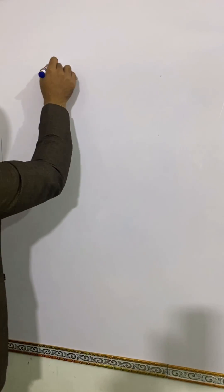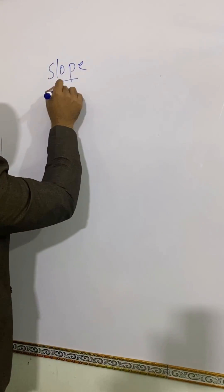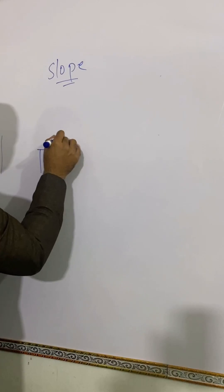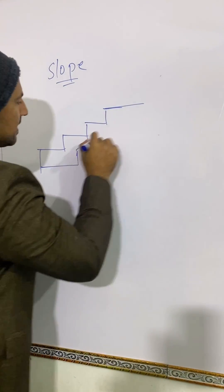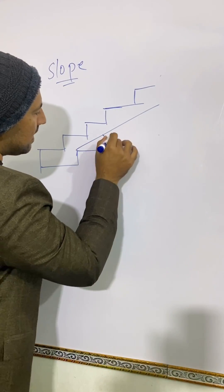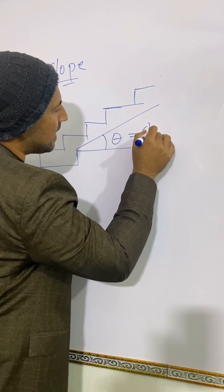How can we determine the slope of the staircase? The slope of the staircase means the angle the stairs make with the horizontal line. You can say this angle. This is the slope of the staircase.